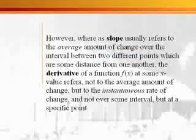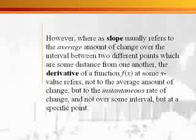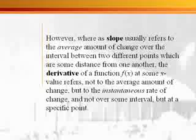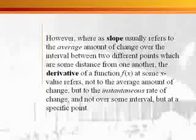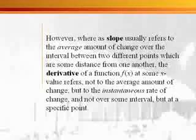However, whereas slope usually refers to the average amount of change over the interval between two different points which are some distance from one another, the derivative of a function at some x value refers not to the average amount of change but to the instantaneous rate of change, and not over some interval but at a specific point.